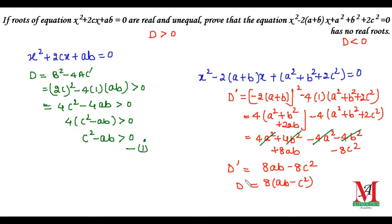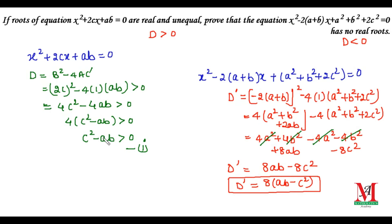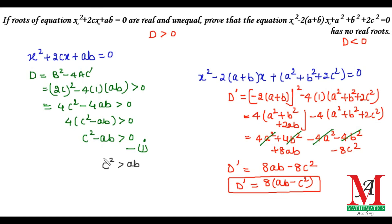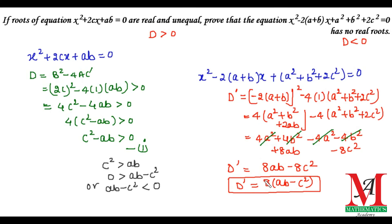From Equation 1, c² - ab > 0, which means c² > ab, or equivalently ab - c² < 0. Multiplying both sides by 8 gives 8(ab - c²) < 0, which means D' < 0.